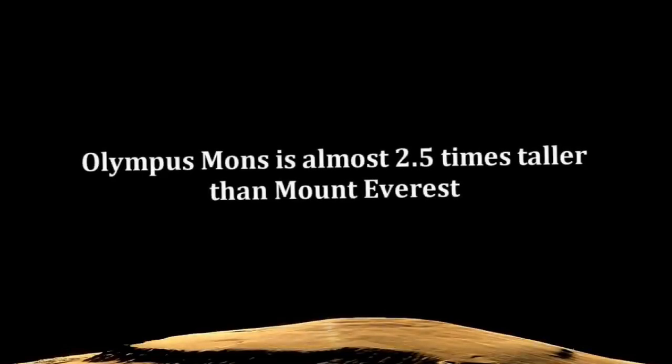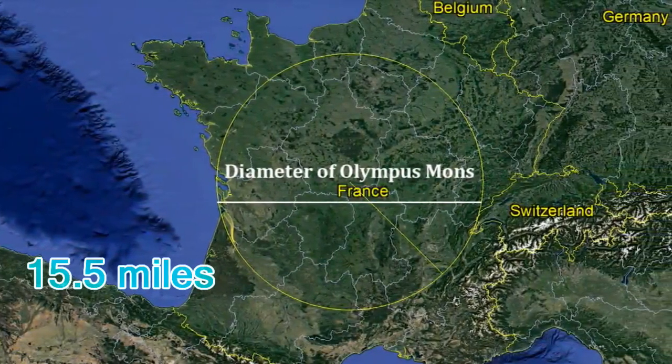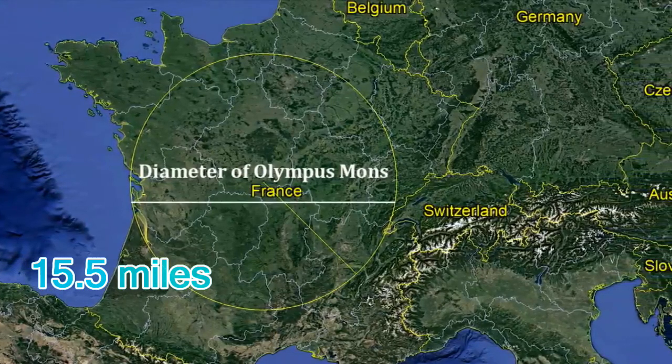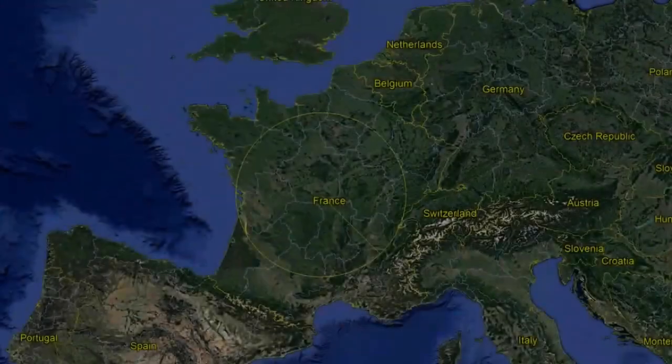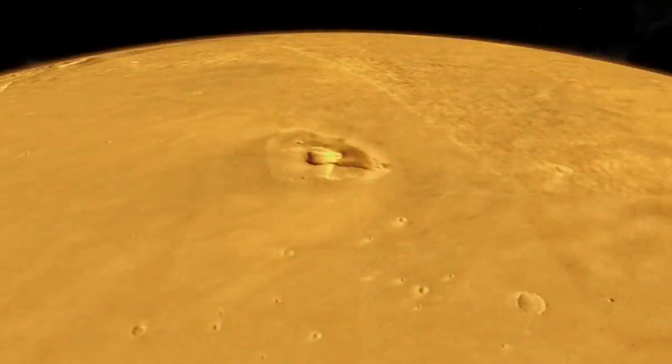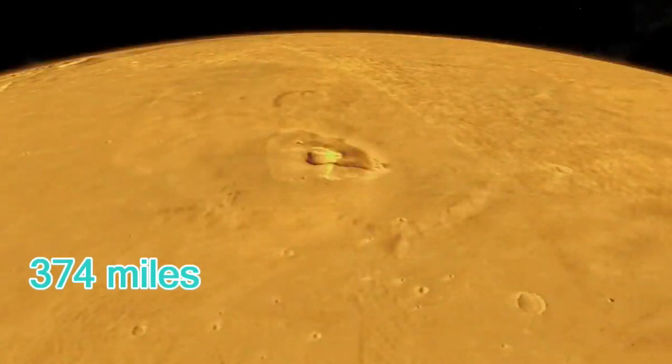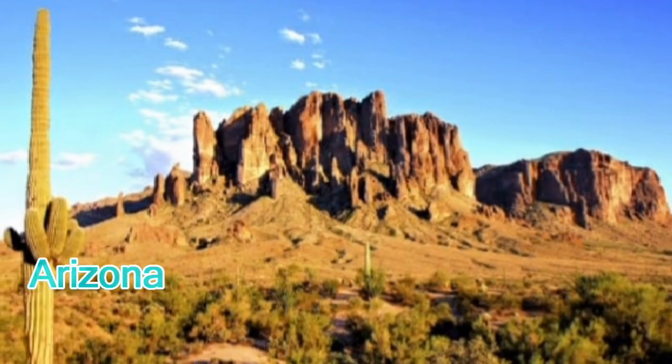At 15.5 miles, Olympus Mons is the tallest mountain in the entire universe. Not to mention that it spreads across 374 miles, which is equivalent to the land space of Arizona.